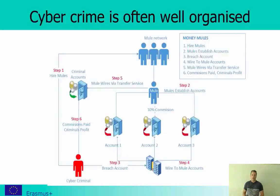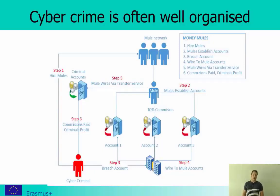In the figure, you can see that in step one you hire or recruit mules — in this example they are paid. The mules establish bank accounts in step two. The cyber criminal then makes a breach on some account and wire-transfers funds to the mule accounts in step four. The money are spread to different mules, who take out the money and transfer them via a non-traceable service in step five to the criminal's accounts. He may only get 90%, but he is safe because he received the money in a non-traceable way.